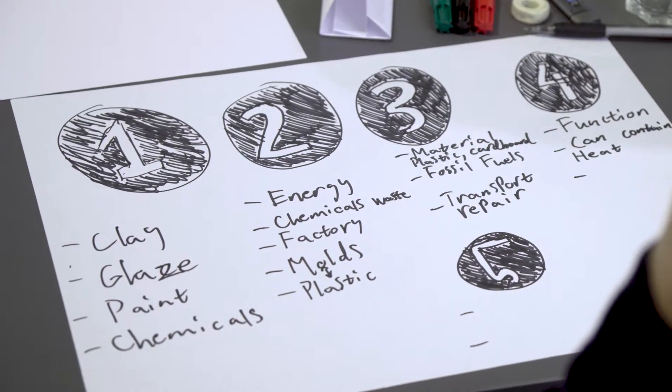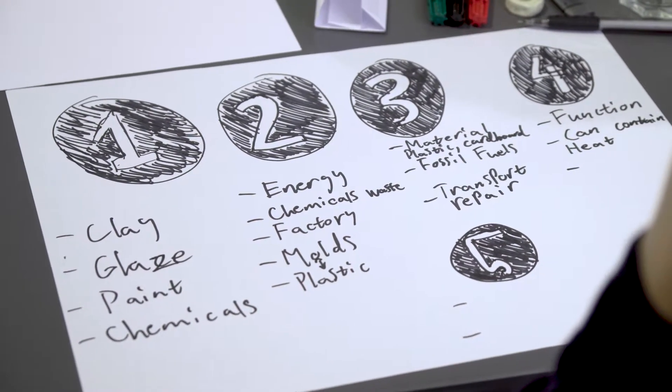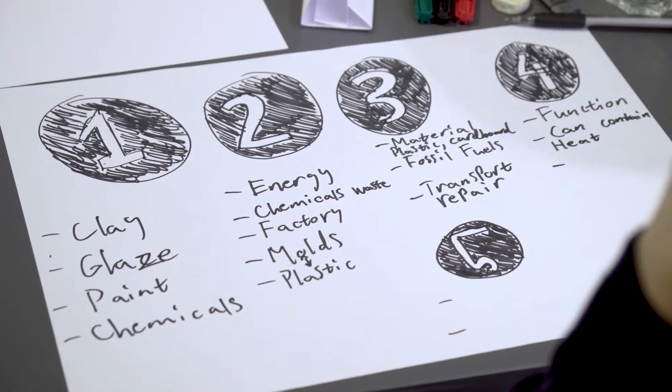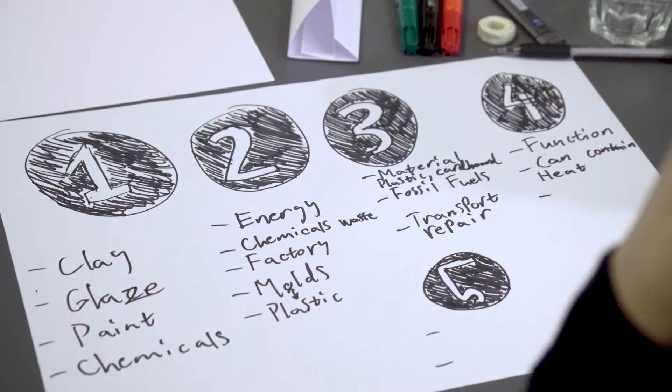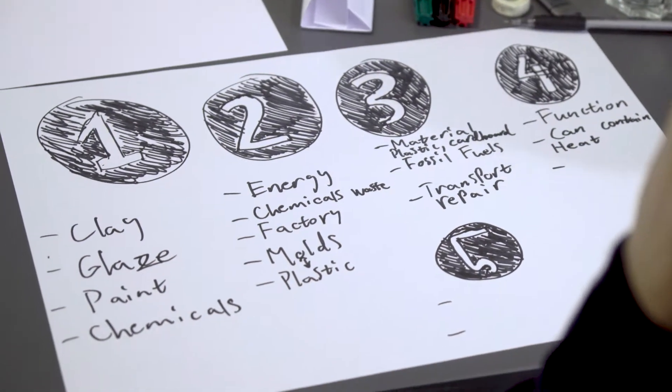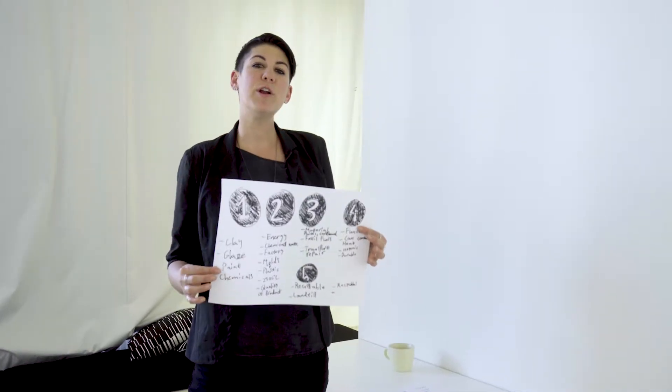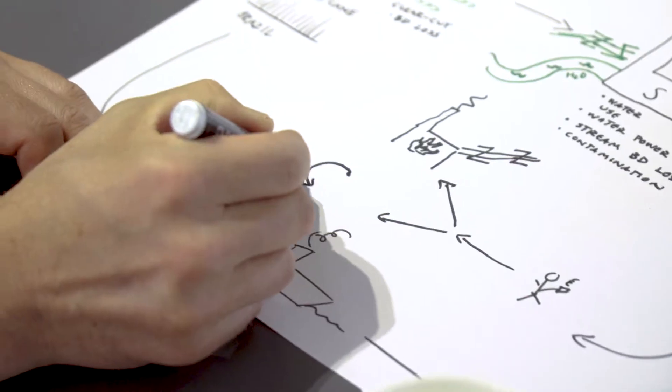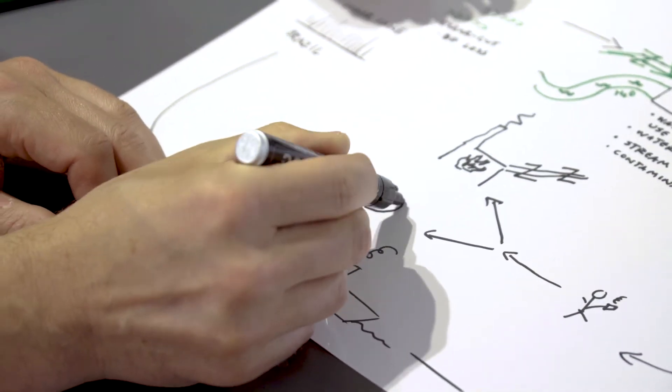These are a bunch of different examples that were done today in the workshop. There are no really hard or fast rules, other than you want to go through the five main lifecycle stages from material extraction through to end of life.